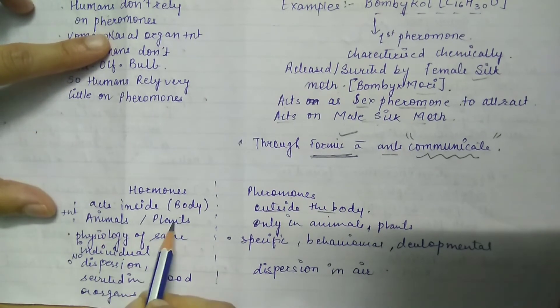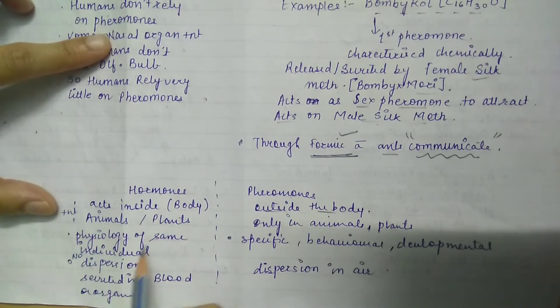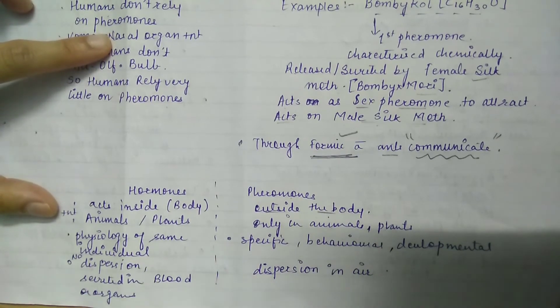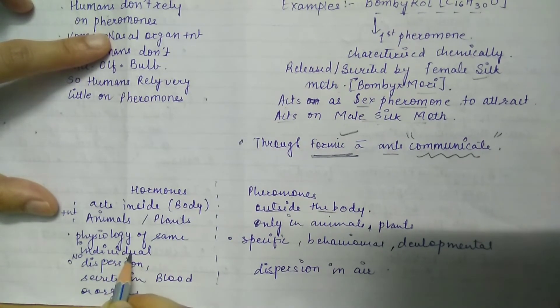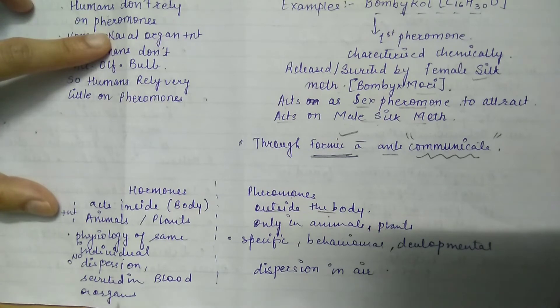Animals and plants can have hormones, and animals and plants can also have pheromones. If you think about how pheromones come out, plants also secrete pheromones. Hormones affect the physiology of the same individual.